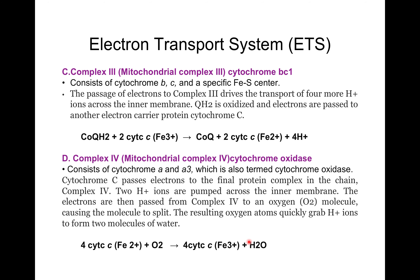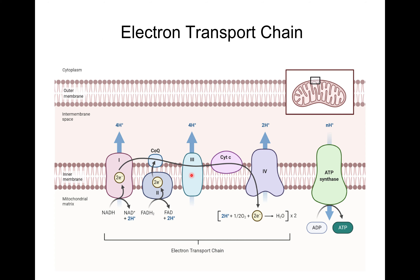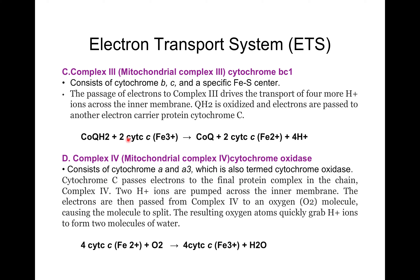Complex 3, mitochondrial complex 3, is cytochrome BC1. It consists of cytochrome B, cytochrome C1, and a specific iron-sulfur center. The passage of electrons through complex 3 drives the transport of four more H⁺ ions across the intermembrane space. QH2 is oxidized and electrons are passed to another electron carrier protein, cytochrome C. The reaction is: coenzyme QH2 + 2 cytochrome C (Fe³⁺) → coenzyme Q + 2 cytochrome C (Fe²⁺) + 4 H⁺.